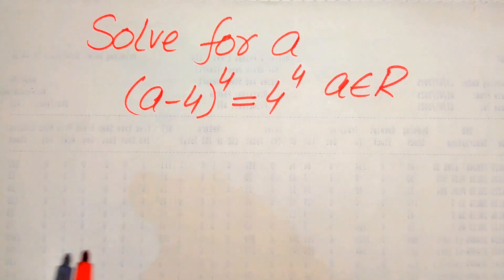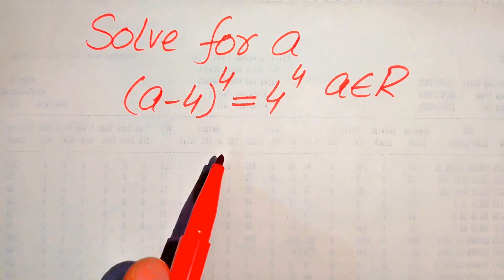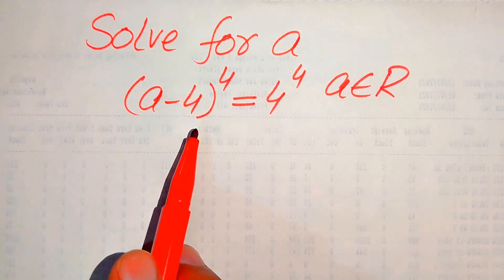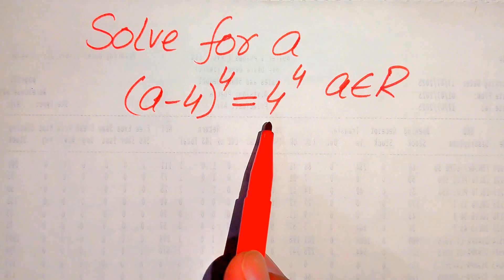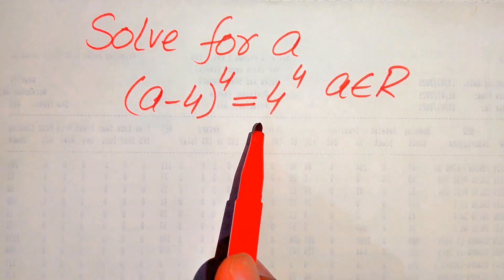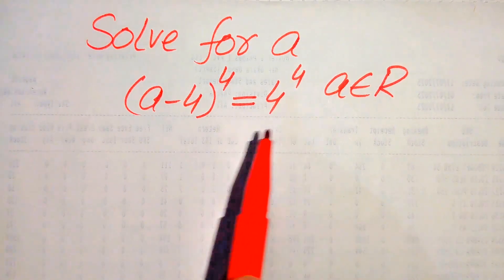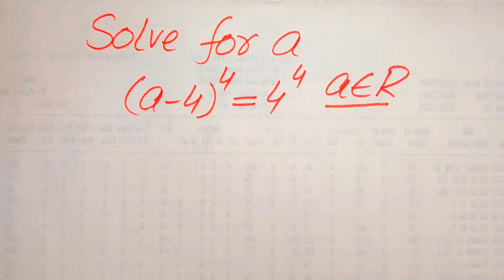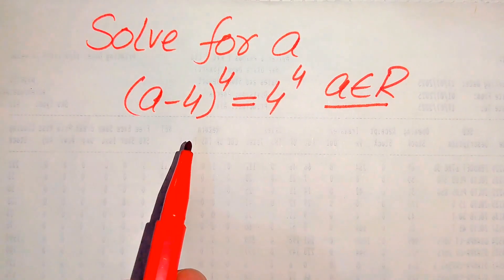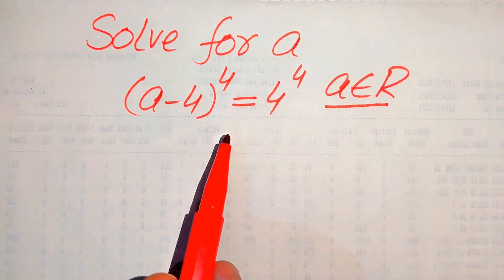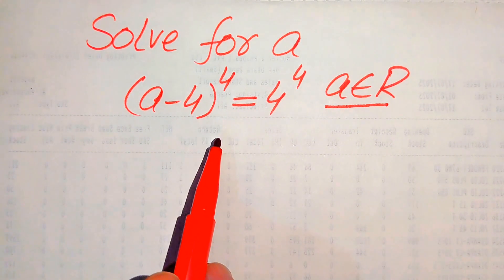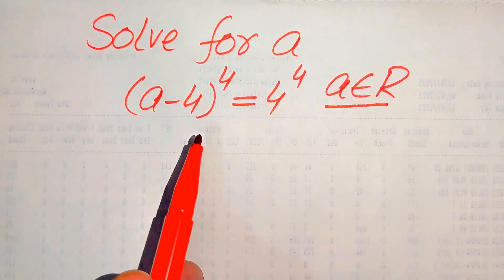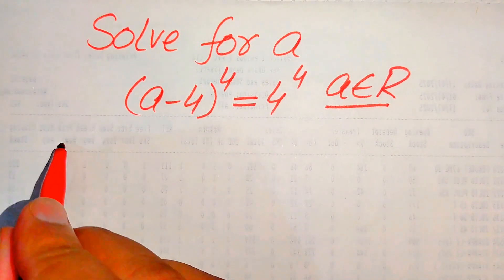Hello everyone. We need to solve for the values of a if (a-4) to the power of 4 equals 4 to the power of 4. Remember that a must be a real number. This is a fourth-order equation, which means it has four roots, and we will find all the real roots of this equation.